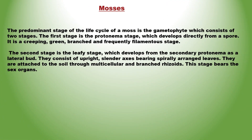Like all bryophytes, the predominant stage of the life cycle in mosses is the gametophyte, which consists of two stages. The first stage is the Protonema stage, which develops directly from the spore. It is a creeping, green, branched and frequently filamentous stage. The second stage is the leafy stage, which develops from the secondary protonema as a lateral bud. It consists of upright, slender axis bearing spirally arranged leaves, attached to the soil through multicellular branched rhizoids. This stage bears sex organs.